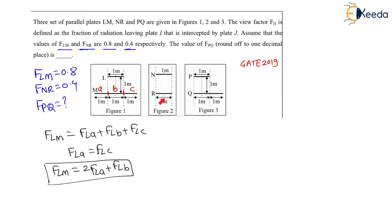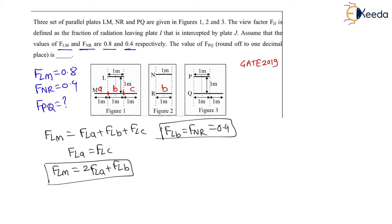Now let us go to figure 2. For figure 2, we have plates N and R. L and N are exactly similar — both 1 meter in length. And plate R is exactly similar to part B of figure 1. Therefore we can say F_LB equals F_NR. Since F_NR is given as 0.4, therefore F_LB equals 0.4.